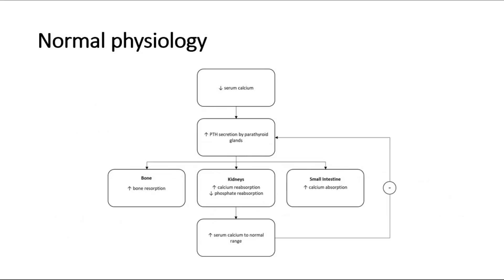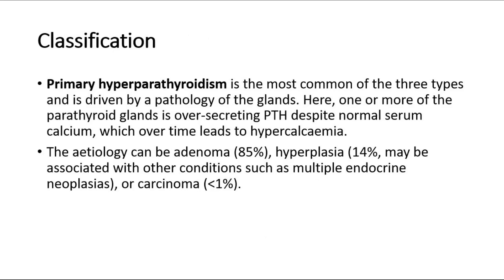Hyperparathyroidism can be classified into primary, secondary, and tertiary. Primary hyperparathyroidism is the most common of the three types and is driven by a pathology of the glands. Here, one or more of the parathyroid glands is over-secreting PTH despite normal serum calcium, which over time leads to hypercalcemia. The etiology can be adenoma, hyperplasia, or may be associated with other conditions such as multiple endocrine neoplasias or carcinoma.